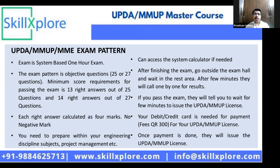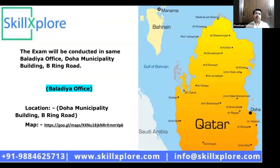A debit card or credit card is needed for payment of 300 Qatari riyals for your UPDA MMUP license. Once payment is done, they will issue the UPDA MMUP license. The exam will be conducted at the Baladiya office, Doha municipality building, B Ring Road in Qatar. You can check out the Google map link given here and navigate on your smartphone when you are in Qatar. SkillExplore will guide you stage by stage, step by step, how to attain this license with fullest confidence.